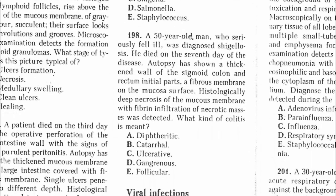Question 198: A 50-year-old man seriously ill with shigellosis died on the 7th day of the disease. Autopsy showed a thickened wall of the sigmoid colon and rectum initial part; a fibrous membrane of the mucosal surface; histologically, deep necrosis of the mucous membrane with fibrin infiltration of necrotic masses were detected. This is fibrinoid necrosis — the best answer is diphtheritic colitis. The answer is A.